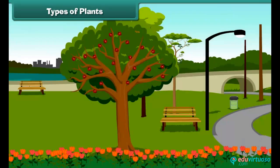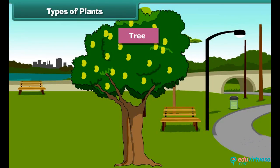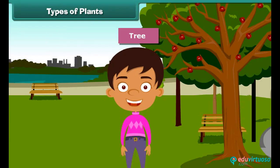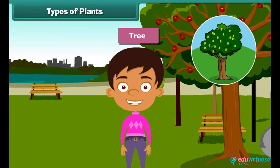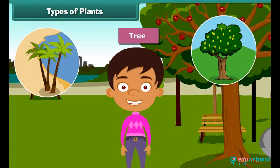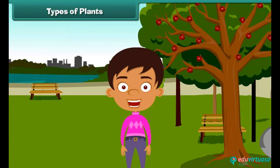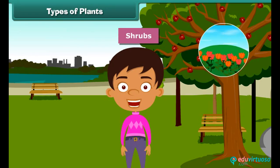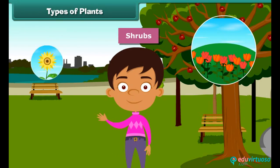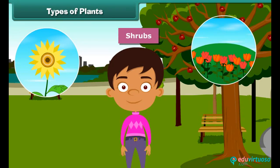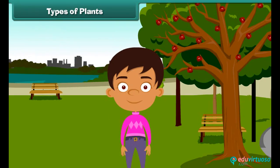Plants which are very tall and strong are called trees. For example, mango tree, coconut tree, and neem are tall trees. Plants which are smaller than trees are called shrubs, such as rose and sunflower plant.